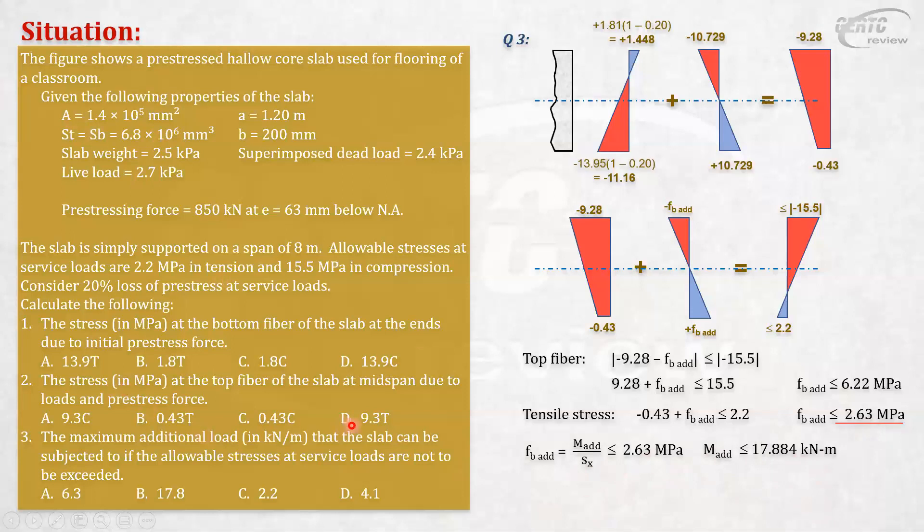I just multiplied, cross multiplied 2.63 times that to get that. The additional moment, because this is at midspan, is equal to the additional load times L² over 8, and that must not exceed 17.884. If you solve for the additional load with L = 8, the additional load must not exceed 2.236 kilonewtons per meter.